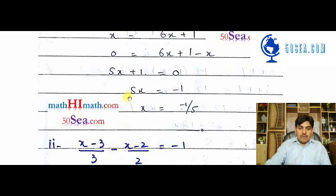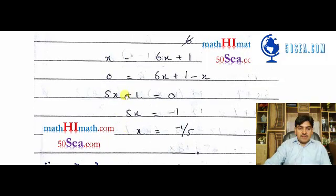Since we need to find the value of x, this plus one goes to the equal sign side and becomes minus one. Five x is multiplying, so five goes to the other side and divides. Therefore, x equals minus one over five.